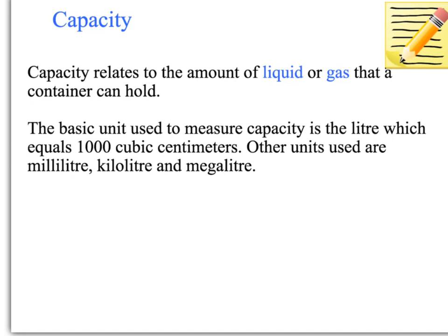The basic unit used to measure capacity is the litre, which equals 1,000 cubic centimetres. So 1 litre equals 1,000 cubic centimetres. Other units that you will use to measure capacity are millilitres, kilolitres, and megalitres.